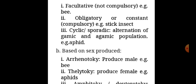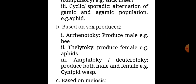Based on sex produced: arrhenotoky produces males (example: bees); thelytoky produces females (example: aphids); and amphitoky or deuterotoky produces both males and females.